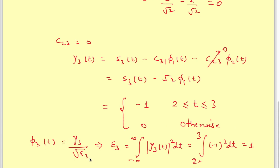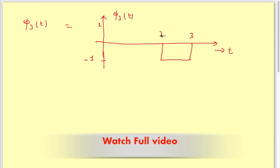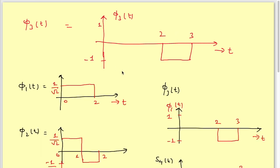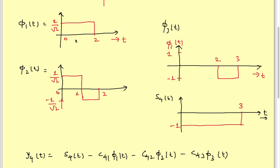The energy of gamma_3(t) = integral of (minus 1)² dt from 2 to 3 = 1. So phi_3(t) = gamma_3(t) / sqrt(1) = minus 1 from 2 to 3, and 0 otherwise. This is our third orthogonal basis function.